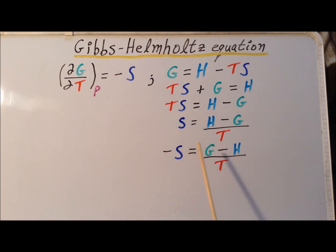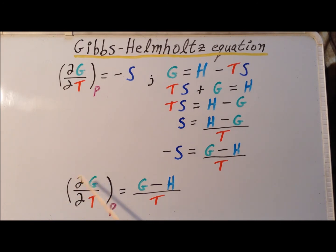So now we can set this expression equal to this partial derivative. And we get our intermediate result that the partial derivative of G with respect to T at constant pressure is equal to G minus H divided by T.